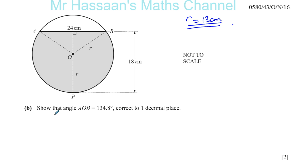It says show that angle AOB is equal to 134.8 degrees, correct to one decimal place. So again, they've given us this so we can use it in other parts of the question if we don't know how to do this. We've got to show the angle AOB. This is the angle here. I have to show that my calculations will give me this for this angle.